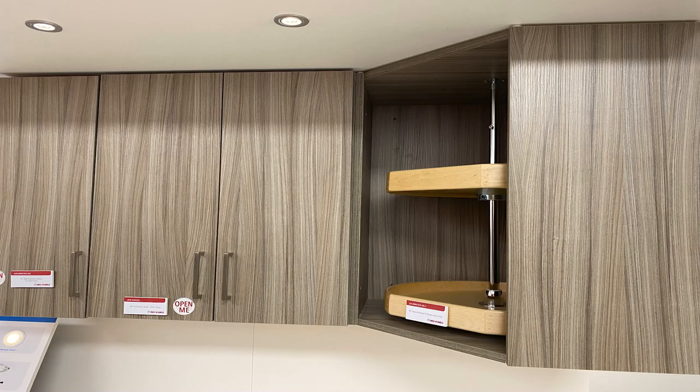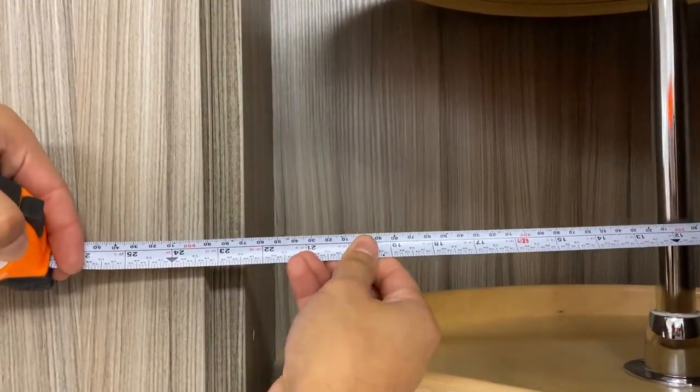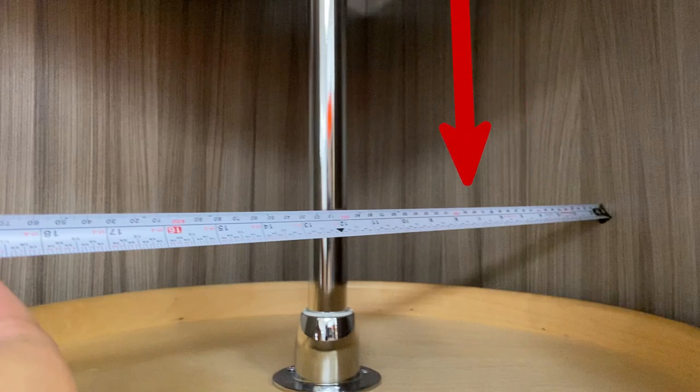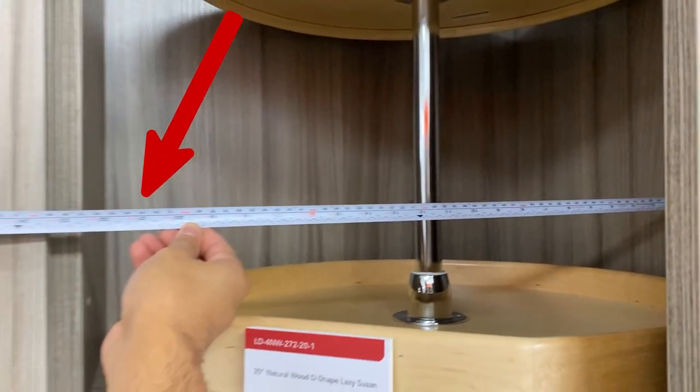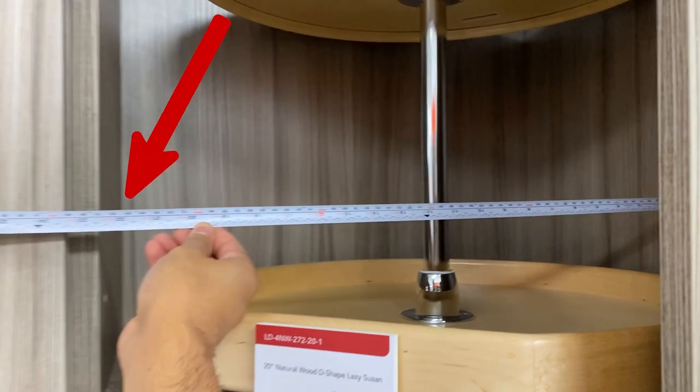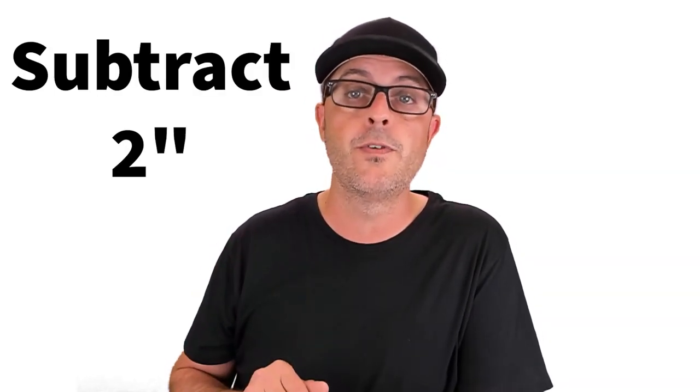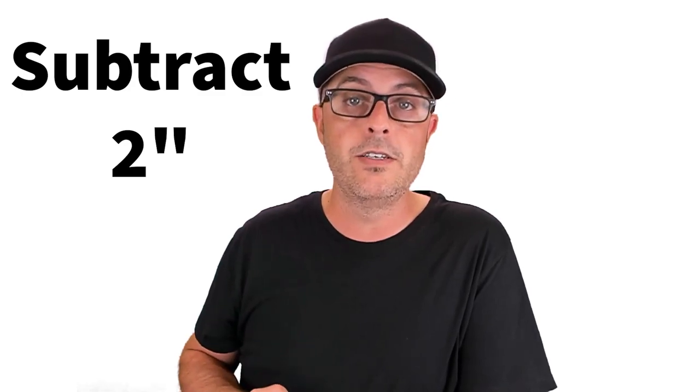When measuring for a D-shaped Lazy Susan for use in a 45 degree angle cabinet you will need to measure the inside space of the cabinet from the inside back of the cabinet to the side wall of the cabinet that is parallel with the back side of the cabinet. Write this measurement down then subtract two inches from that measurement and order the Lazy Susan that is the closest to that size without selecting a larger size.